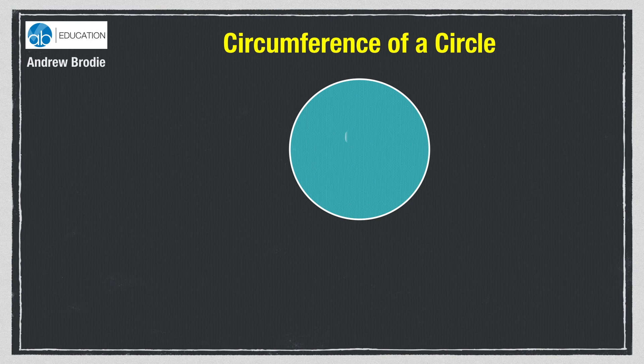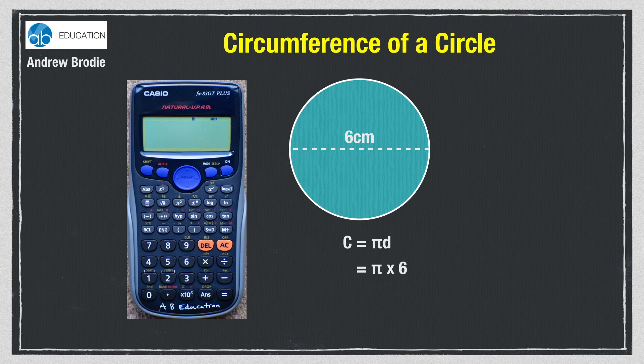Here's an example where the diameter is shown as 6cm. The formula we need is C equals πd, so we need to type pi times 6 into the calculator. On most calculators we need to press the shift key first, then the key with the pi symbol shown above it to access pi.